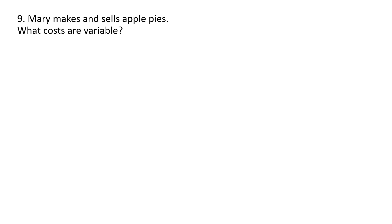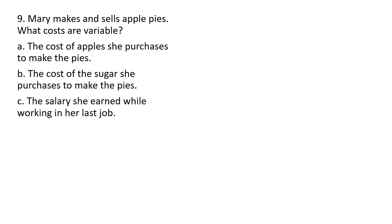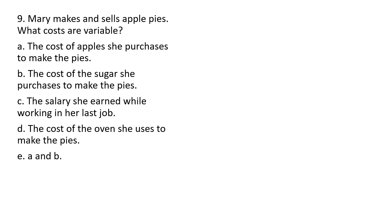Number nine: Mary makes and sells apple pies. What costs are variable? The cost of apples she purchased to make the pies — that would be a variable cost; the more pies she makes, the more apples she needs. Answer choice B is also correct: the cost of sugar she purchases to make the pies, since the more pies she makes, the more sugar she needs. Answer choices C and D are not correct. So A and B are the correct answers.